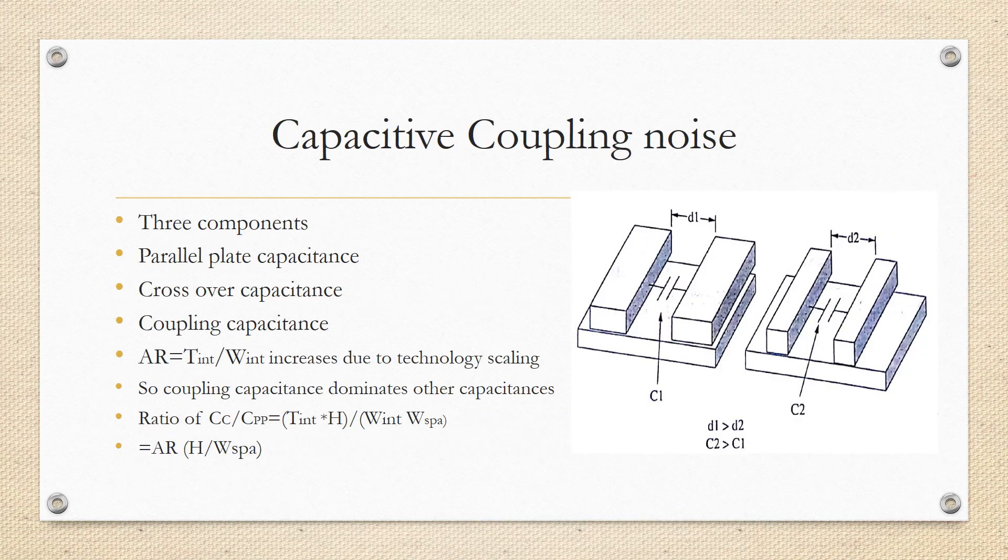Now capacitive coupling noise. There are three components of interconnect capacitance: parallel plate capacitance, crossover capacitance, and coupling capacitance. The increase in the aspect ratio Tint/Wint of an interconnect due to non-ideal scaling is also discussed.